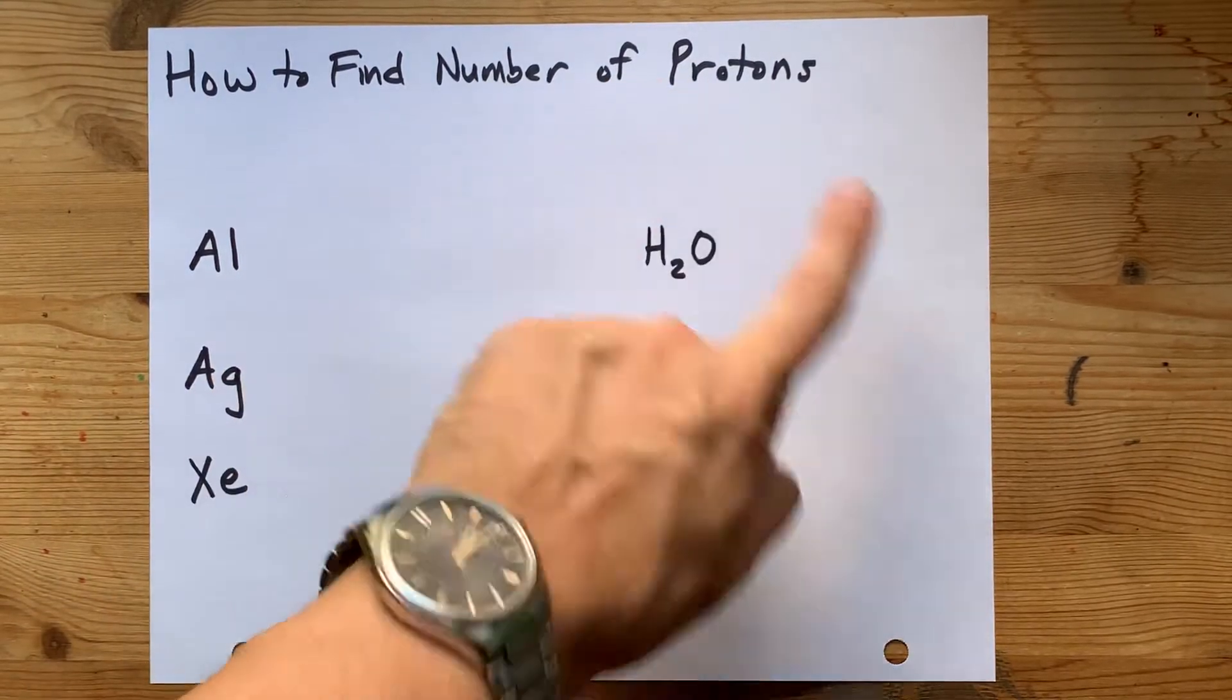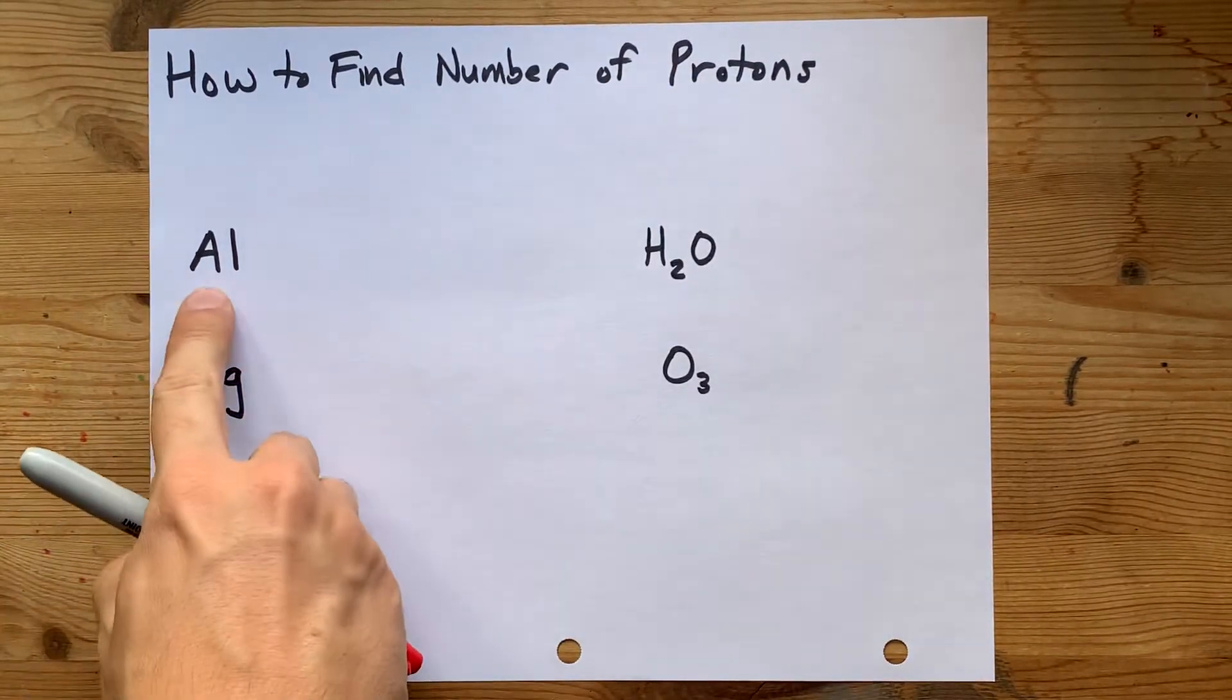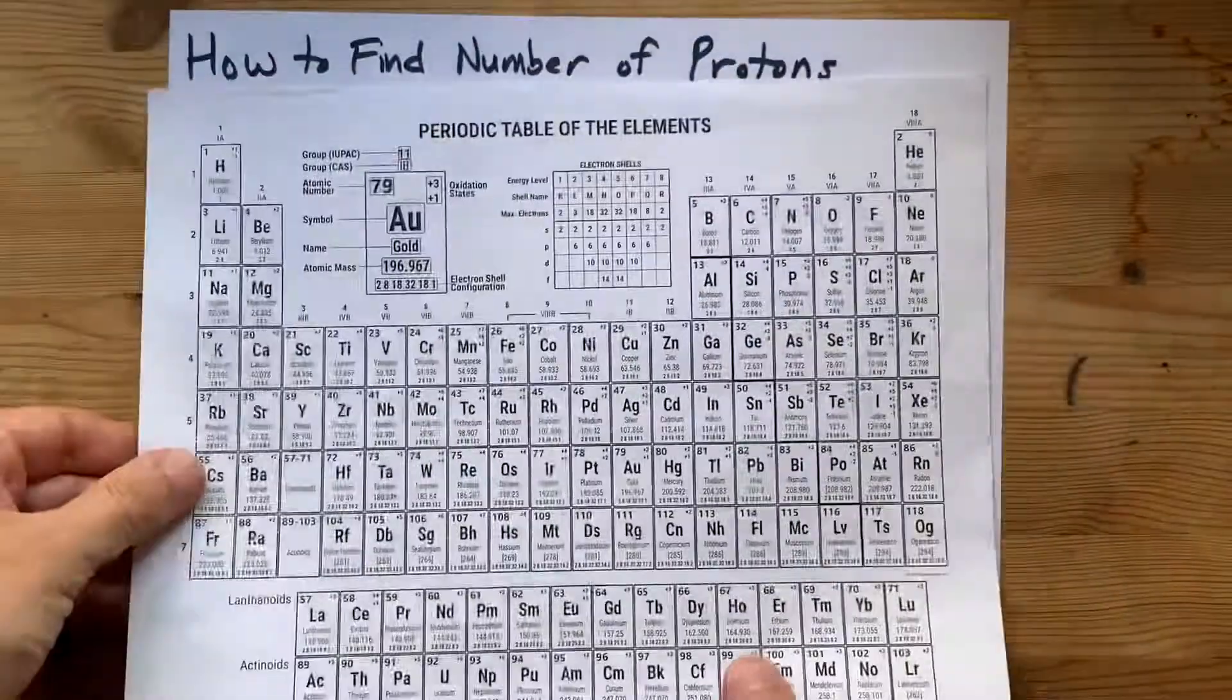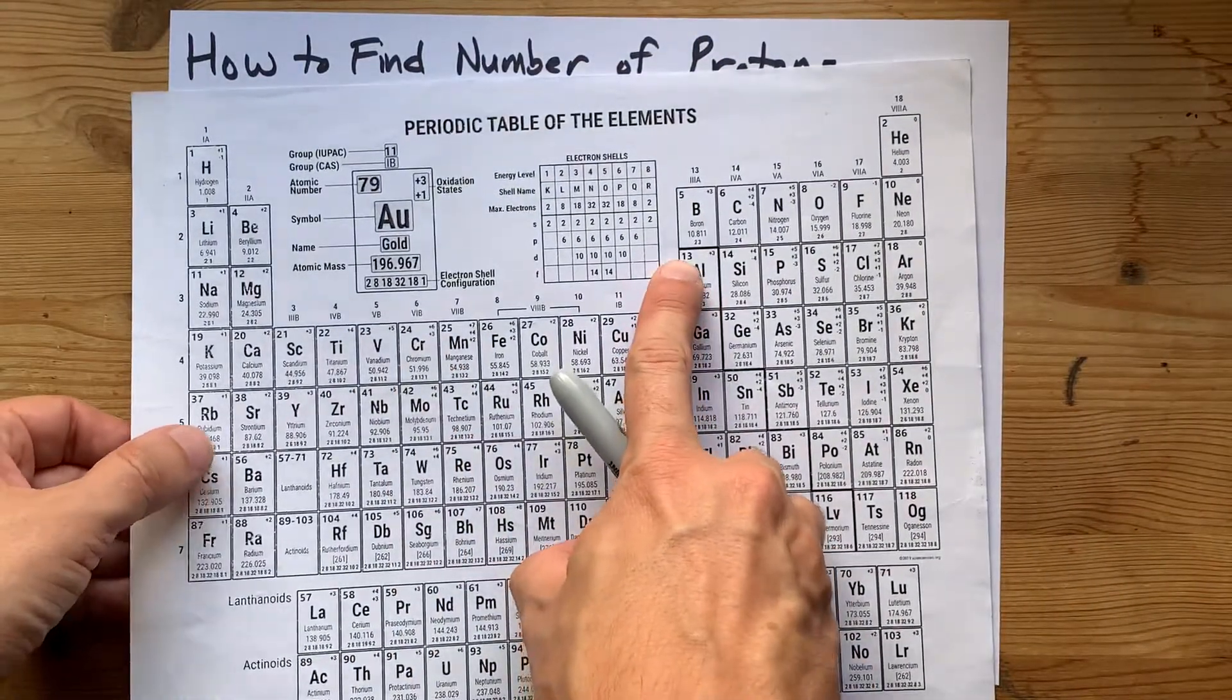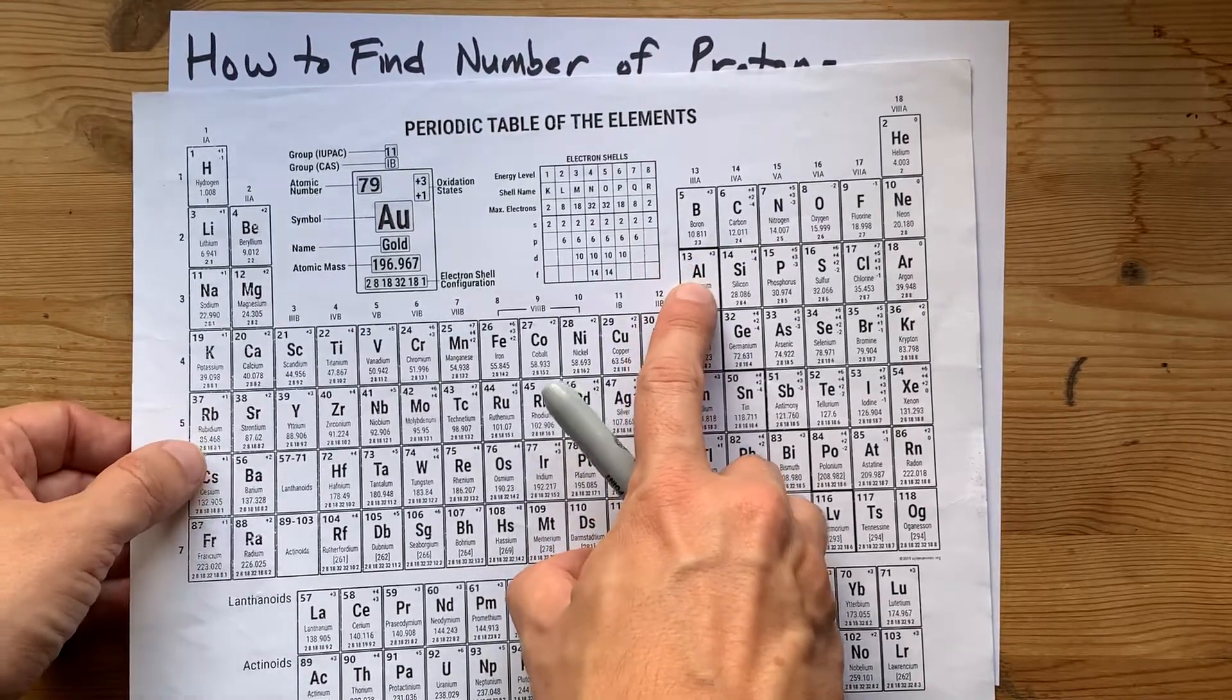If you are asked to find the number of protons in a particle, you're going to need a periodic table. The number of protons is the atomic number that corresponds to that element.